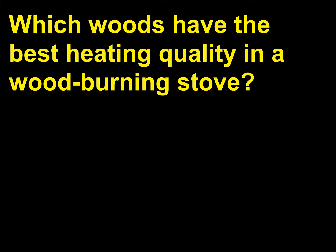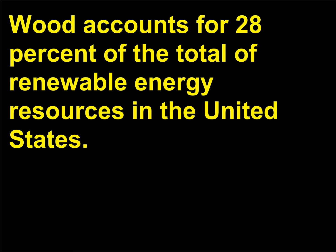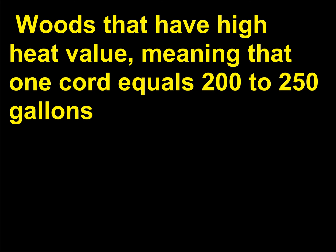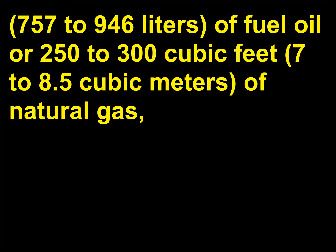Which woods have the best heating quality in a wood-burning stove? Wood accounts for 28% of the total renewable energy resources in the United States. Woods that have high heat value, meaning that one cord equals 200 to 250 gallons (757 to 946 liters) of fuel oil or 250 to 300 cubic feet (7 to 8.5 cubic meters) of natural gas, provide the most efficient burning.